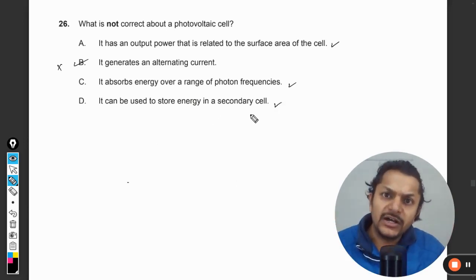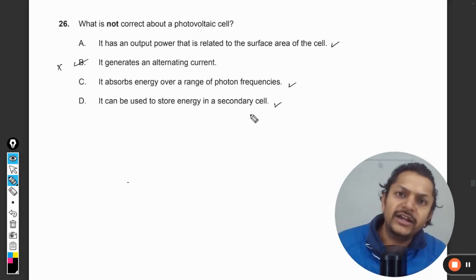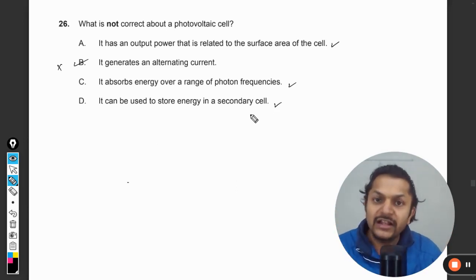If there is a solar cell and you are connecting it with a secondary cell, it can create DC output, and that DC output becomes DC input into the secondary cell, and thereby it can recharge the secondary cell.